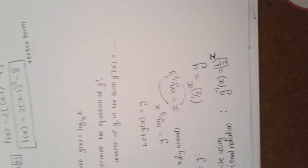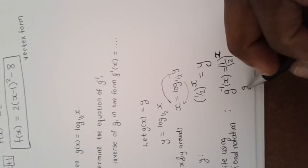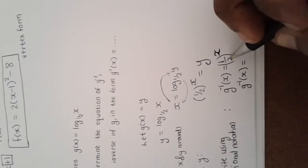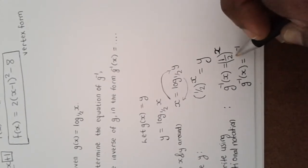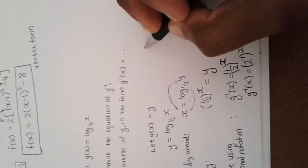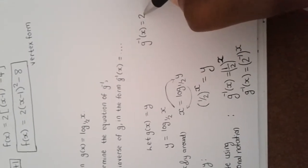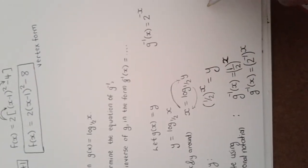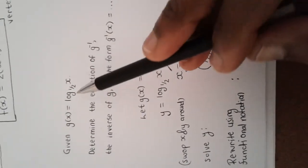There is also another way to write this. When you bring the one-half up, it gets an exponent of negative one, and you still multiply by x. So g inverse equals 2^(−x). That's another equivalent way to write the equation of the inverse.